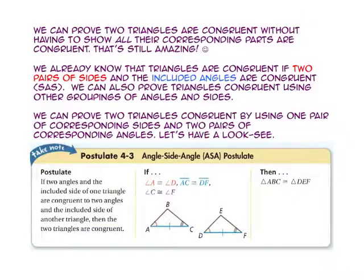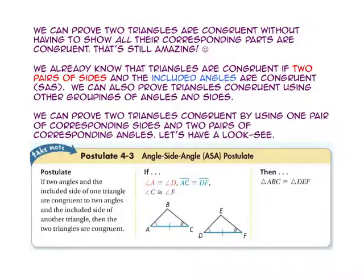In our last lesson, we learned we can prove two triangles are congruent without having to show all their corresponding parts are congruent. We already know that triangles are congruent if two pairs of sides and the included angles are congruent — that's our side-angle-side postulate. We can also prove triangles congruent using one pair of corresponding sides and two pairs of corresponding angles.